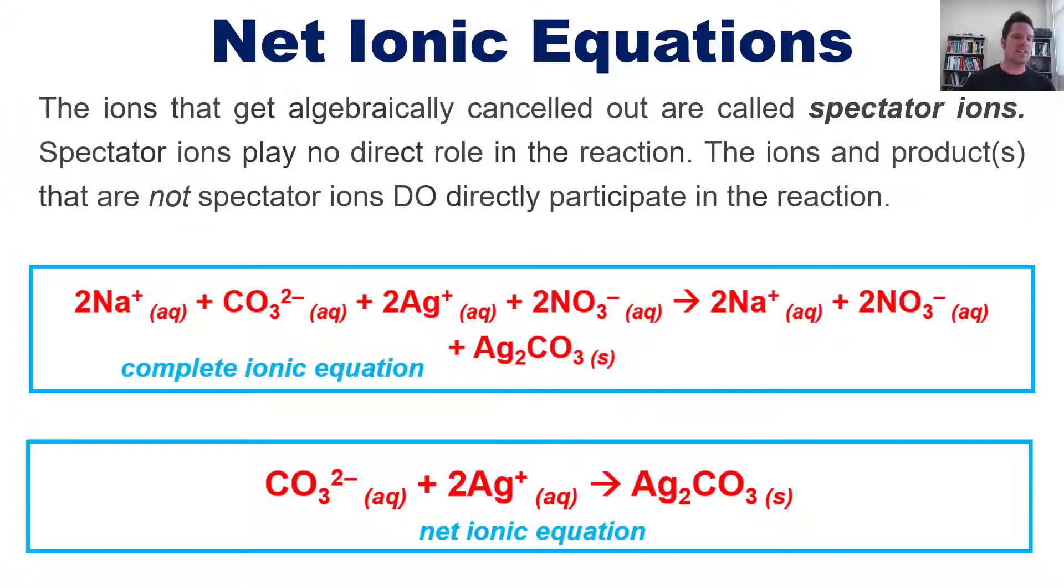With that said, the ions that get algebraically canceled out, in this example, the sodiums and the nitrates that I've indicated here, with these kind of black lines here, are called spectator ions.